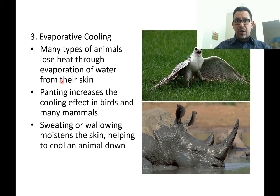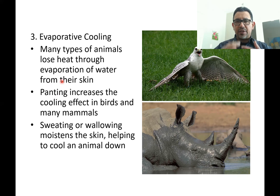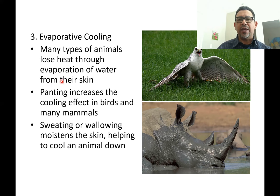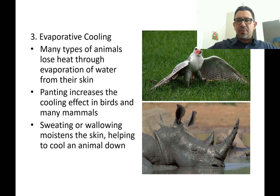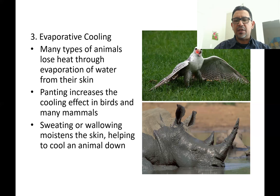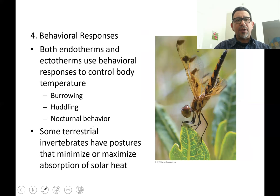Another strategy is panting. Dogs don't sweat — when overheated they stick their tongue out and breathe heavily. When they exhale, water vapor carries away excess heat. Birds don't sweat either — an overheated bird opens its beak and extends its wings, increasing the surface area for heat to be lost by radiation or convection.